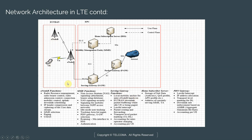The Serving Gateway acts as a local mobility anchor for inter-eNodeB handovers. As UEs move between eNodeBs, it buffers all the data while the signaling for handovers is happening. Once the signaling is done and the user is connected to the new eNodeB, the data is delivered to that eNodeB. Lawful intercept is also handled here — if law enforcement wants to eavesdrop on a given subscriber, they can sniff that traffic at the SGW since all data traffic passes through it.